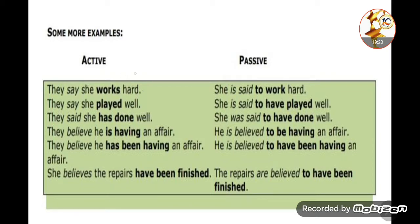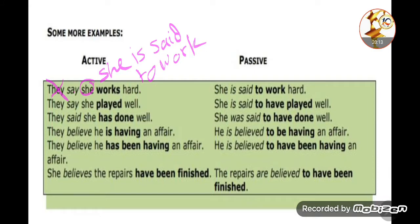Now let's take more examples showing different tenses. 'They say she works hard.' We want 'she' as subject. With 'say' — present — it becomes: 'She is said.' Then for the infinitive, since 'works' is present simple, we use 'to work'. Result: 'She is said to work hard.'